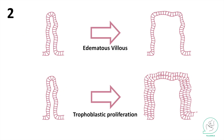The next stage is the placenta. We know the trophoblastic layer of the placenta has its own villi. The first thing we can see under the microscope is an edematous villus, and we also see trophoblastic proliferation.